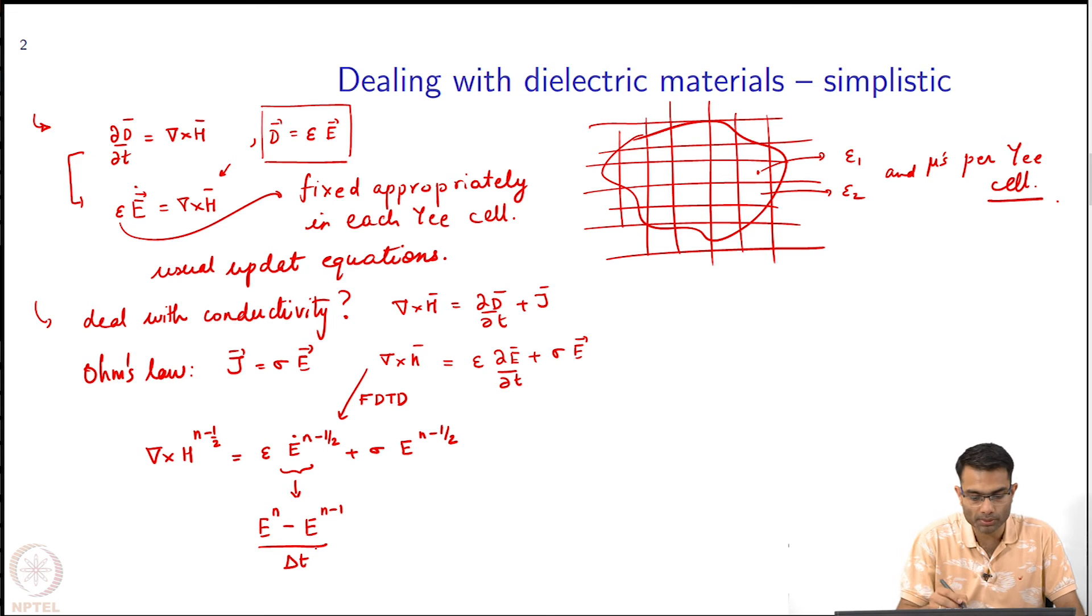What is the problem now over here? I was storing electric field only at integer time instance, but now this equation is requiring that I also needed it at half a time instant. What should I do?